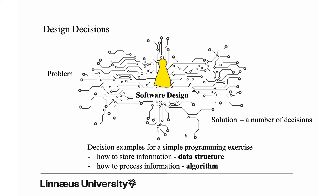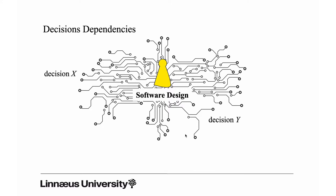When we make solutions there will be a number of decisions, and when we have a number of decisions it's very interesting because these decisions are dependent. In this picture we have a decision X and a decision Y, and if we make decision X first it could well be that that decision restricts the options we have at hand to solve the problem that eventually resulted in decision Y.